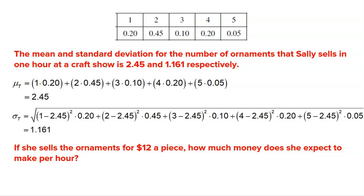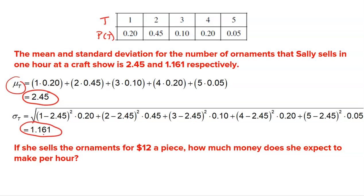Let's look at a different problem — a discrete random variable. This is T, the number of ornaments that Sally sells in an hour at a craft show. She either sells one, two, three, four, or five ornaments, and those are the probabilities making this discrete. Using the formulas, multiplying each outcome by its probability and adding them together gives a mean of 2.45 ornaments. The standard deviation is 1.6161 ornaments.